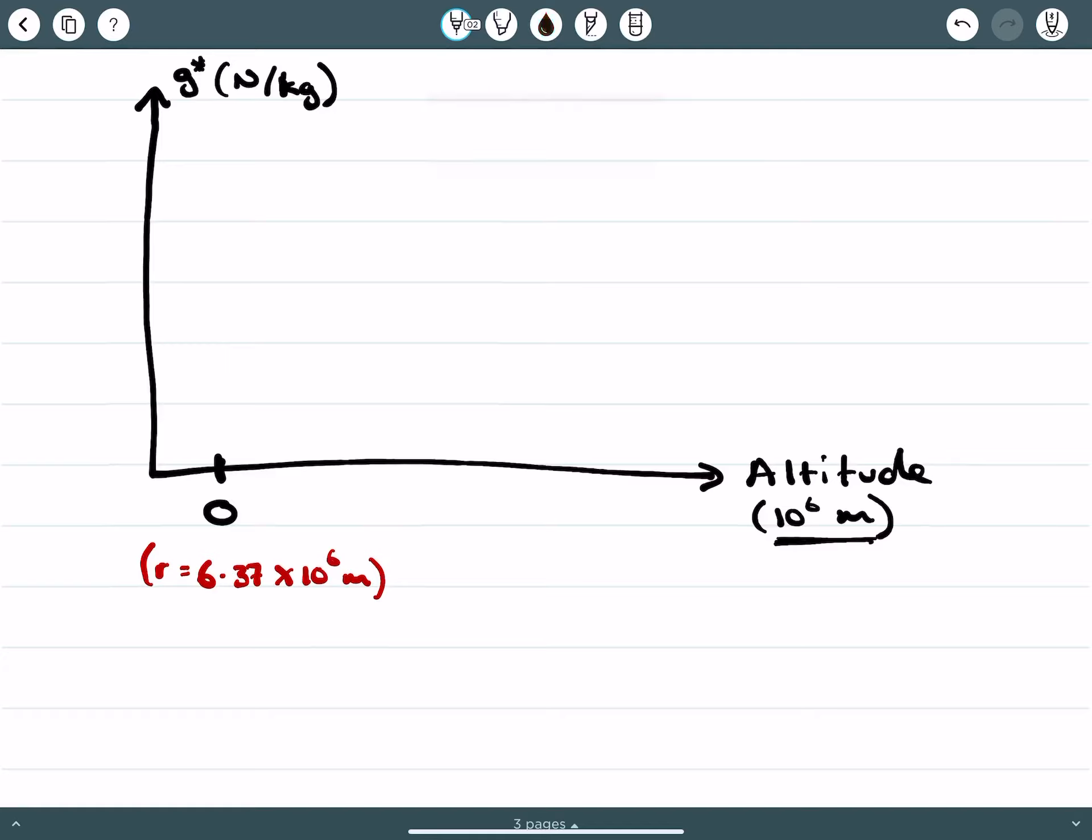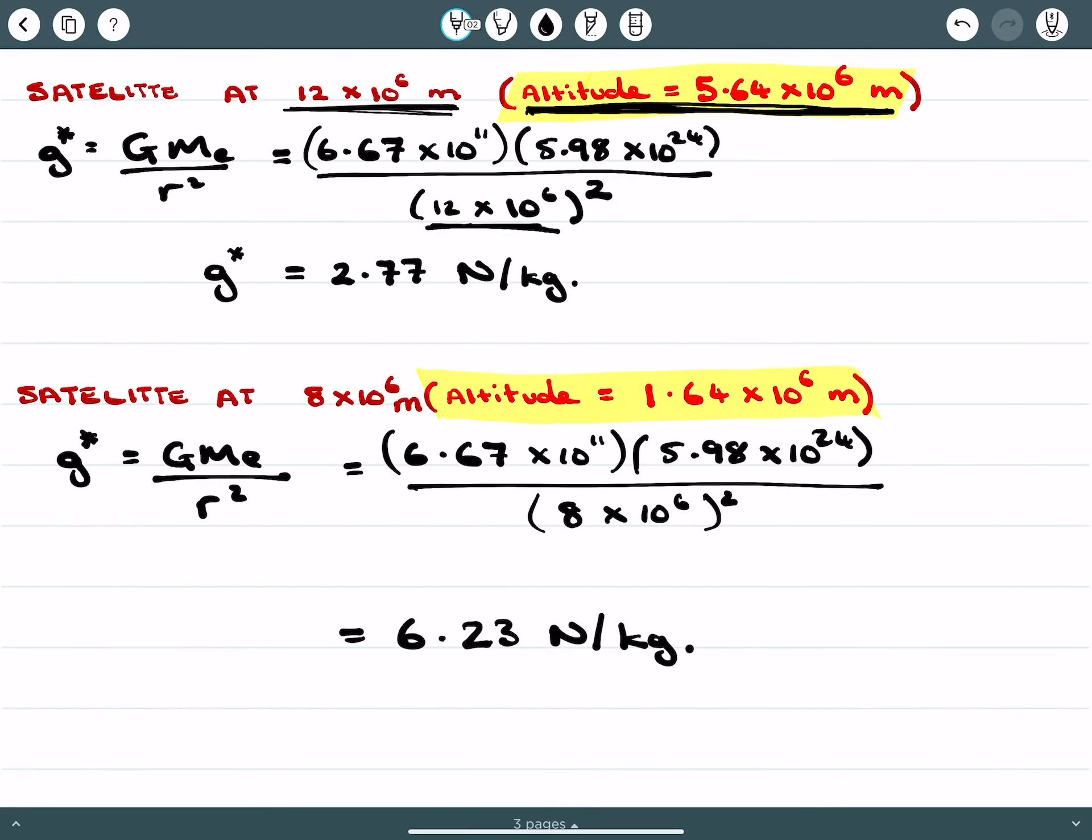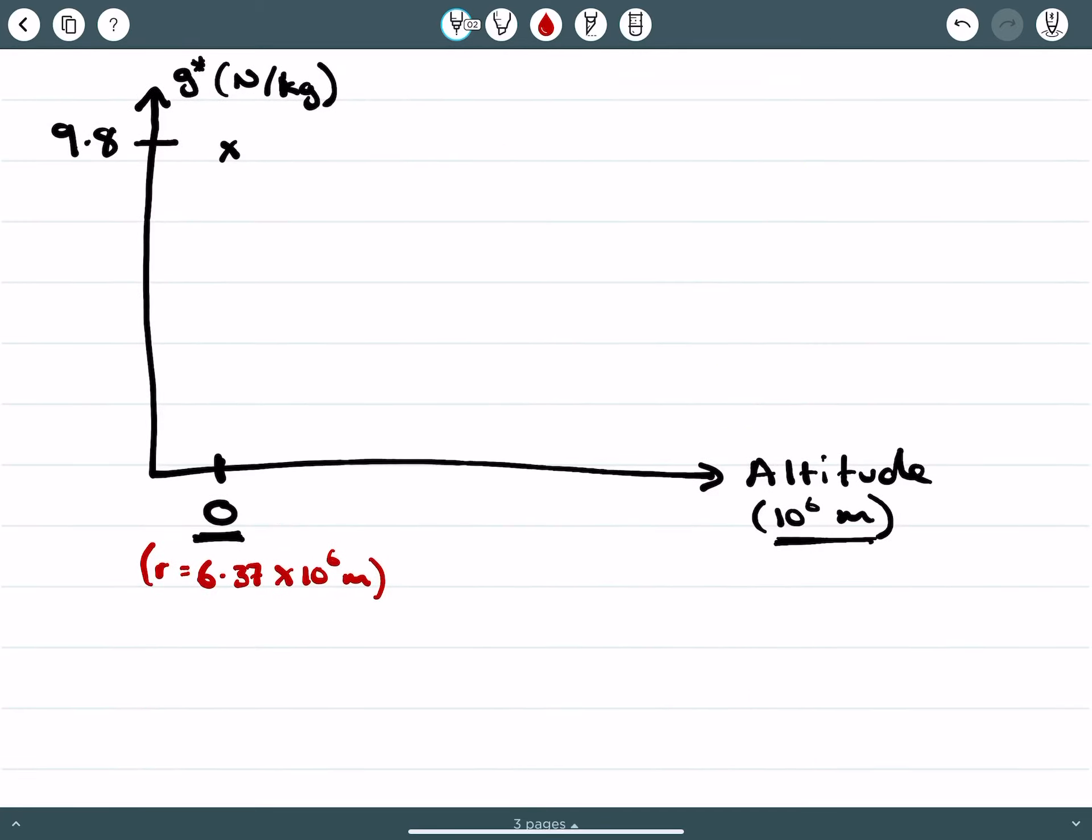So if I return to our first example, or if I think about when I'm at the surface of the Earth, gravity that I experience will be 9.8. And from our two results here, we have two different values for relative gravity at 1.64 times 10 to the 6 meters, that's at 8 times 10 to the 6 meters from the center of the Earth. We had a value of 6.23. And at 5.64 altitude, we had a value of 2.77.